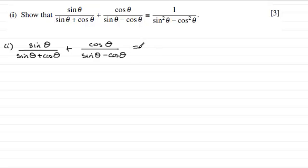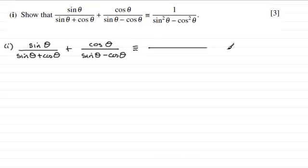So what is this going to be identical to? I can see that we need to achieve one term, and we've got two terms here. Whenever I see that, I always want to put these over a common denominator — preferably the lowest common multiple — which would be (sine theta plus cos theta) multiplied by (sine theta minus cos theta).